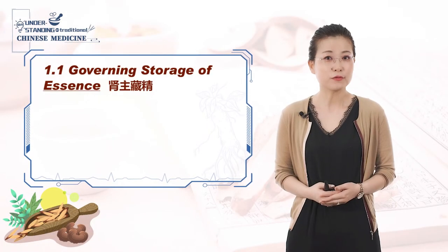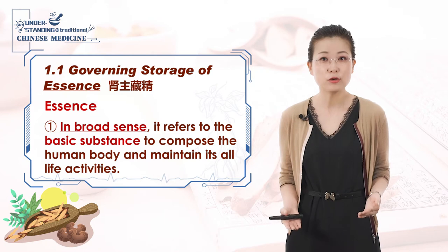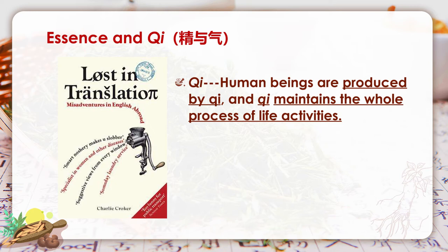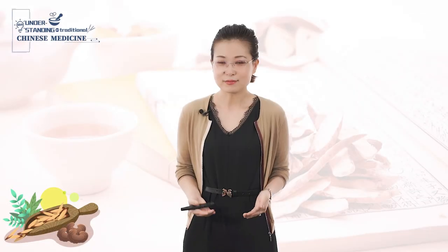First, we need to figure out what is essence. In the broad sense, it refers to the basic substance that composes the human body and maintains all life activities. It is easy to get confused between the concepts of essence and qi. In the section on qi theory, we learned that human beings are produced by qi, and qi maintains the whole process of life activities. But now, essence is also described as the basic substance to compose the human body and maintain life activities. I have been teaching basic theory of TCM for more than 15 years, and the similarities and differences between essence and qi have always been a confusing part for students.